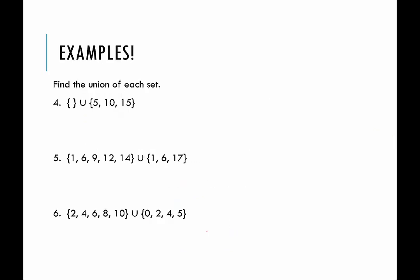A few examples — hit pause and try to find the union of these sets. For the first one, I'm going to call this A and this one B. A union B: A has nothing to offer — there's nothing in set A. So we would just say 5, 10, and 15, just the elements of B. You could also say that the union of A and B is just set B.